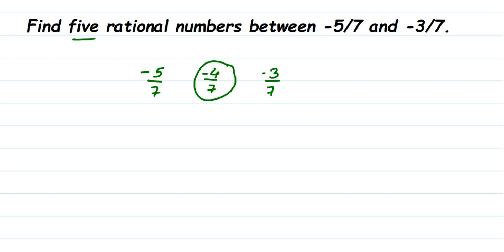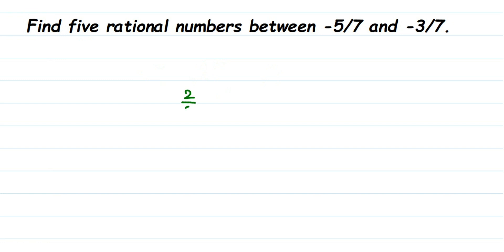We need to find five rational numbers, and I said there are infinitely many between two rational numbers. So here I'm going to find the equivalent rational numbers of -5/7 and -3/7. Equivalent means they are equal in value but look different — for example, 2/3 and 4/6 are equivalent because when you reduce 4/6 by cancelling by 2, you get back 2/3.